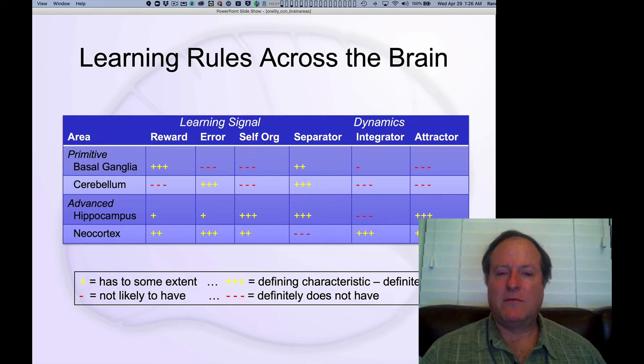This slide shows that learning indeed rules across the brain, actually is just a way of understanding how different areas of the brain can be understood in terms of the kinds of learning mechanisms that they use.